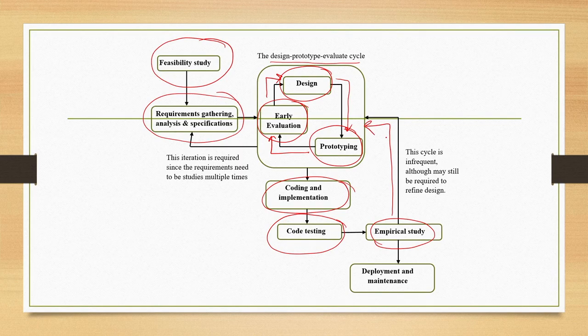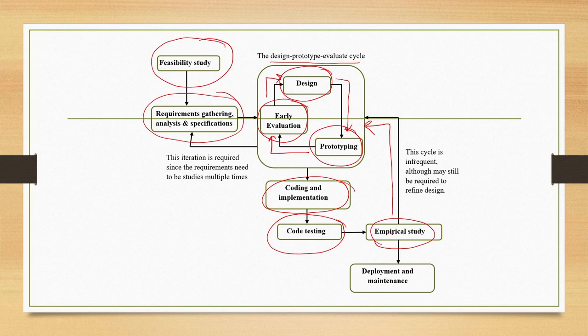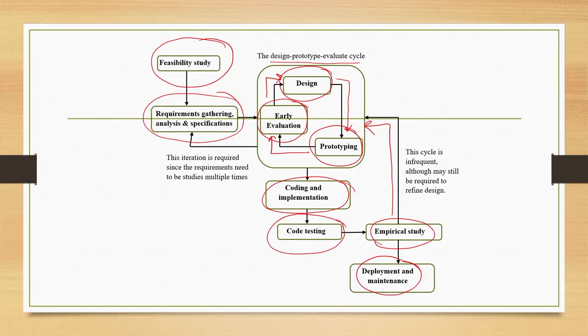At the empirical study stage, if we find some usability issues, we may go back to earlier stages and repeat the sequence. However, this cycle ideally should be very infrequent — maximum once or twice — otherwise the overall cost and turnaround time of the project will be significant. Once we arrive at an executable and usable system, we go for deployment and maintenance.